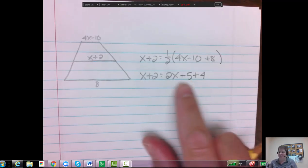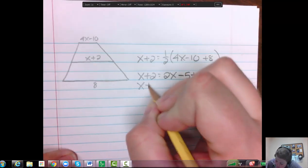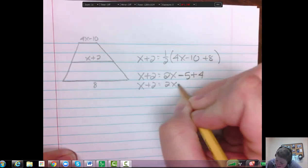So let's simplify a little more. We'd have x plus 2 equals 2x minus 1.